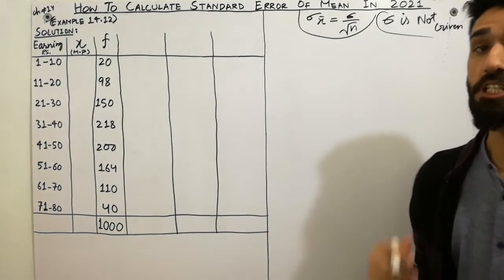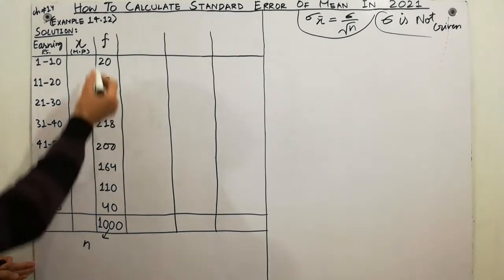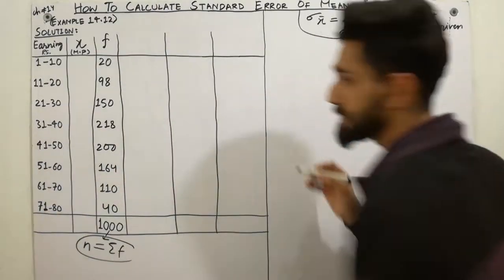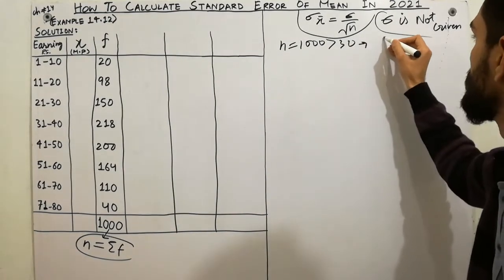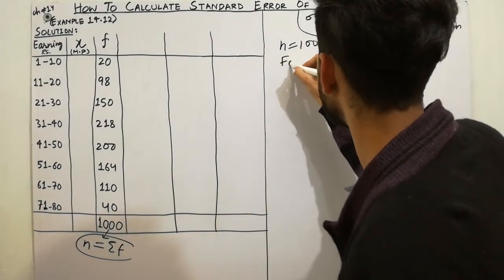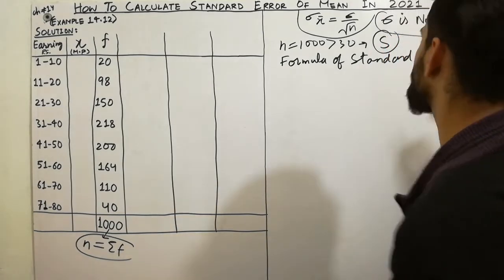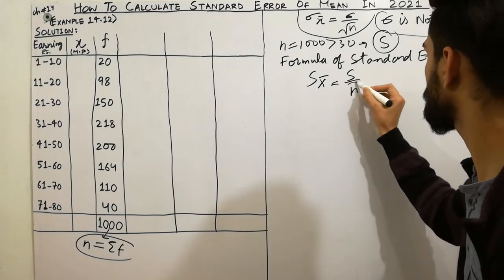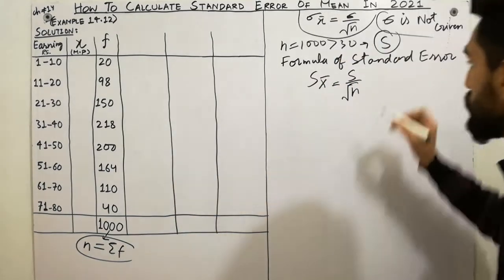Because sigma is not given, you have to check the sample size. The summation of f gives us n, which is 1000. So the sample size is 1000. Since the sample size is greater than 30, we use the formula: s x-bar is equal to s divided by square root of n. Small n is already given as 1000, so we need to calculate the sample standard deviation.